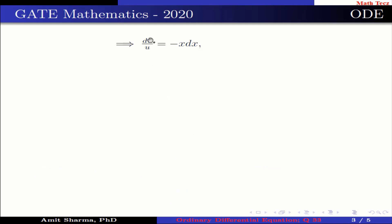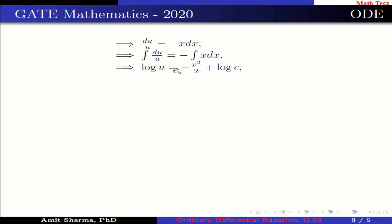This is further written as du/u = −x dx. Now integrating both sides, log u = −x²/2 + log c, which is further simplified as log(u/c) = −x²/2.